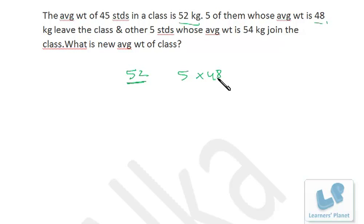After them, 5 students whose average weight is 54 are joining, so in total we are gaining this. So in total we are gaining, if you take 5 as common, 54 minus 48, that's 6. So in all we are gaining 30 kg in total.